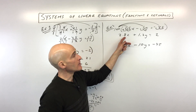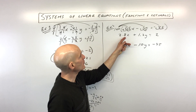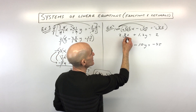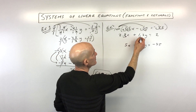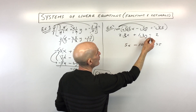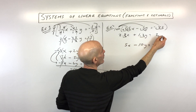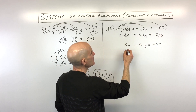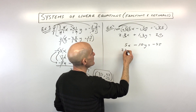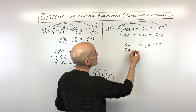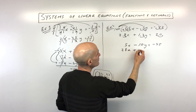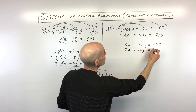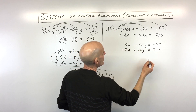For this second equation, we only really need to multiply by 10, because that will move the decimal place one to the right for each term — and we need a placeholder in one spot. So we've multiplied everything by 10, giving us 28x plus 12y equals 20.